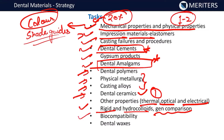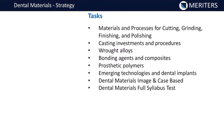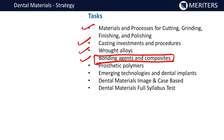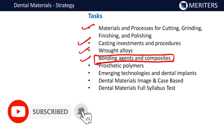Dental ceramics — at least one question is always expected. Other properties like thermal, optical, and electrical are given separately as tasks. We also have biocompatibility, and at least one question is asked in INICT from dental waxes. Dental waxes are a favorite for INICT, and utility wax in particular has been asked repeatedly. Materials and processes for cutting, grinding, finishing, and polishing don't have many questions but are included since examiners can ask beyond the typical scope. Casting, investment, and procedures also carry some importance. Rot alloys, bonding agents, and composites are covered in detail in conservative dentistry.